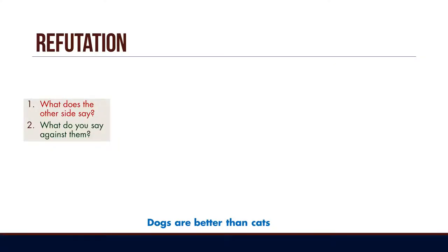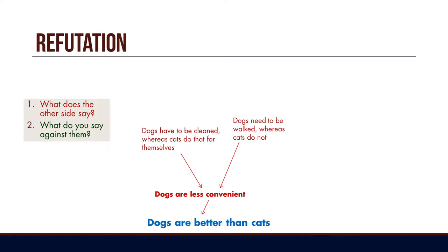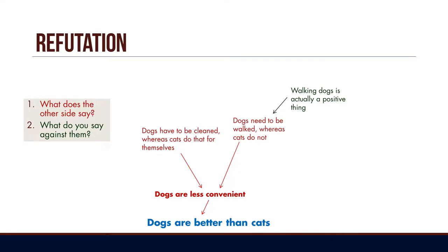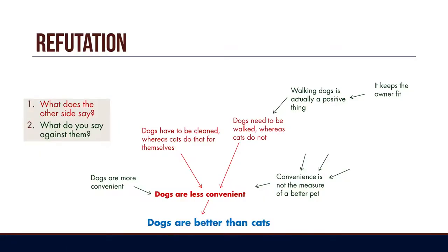Then we teach students what about the other side — how would you refute an argument? We get them to list the thesis and then in red, a different coloured pen, show distinctly the case against. The other side would be: dogs are less convenient because they need to be walked whereas cats do not, and dogs need to be cleaned whereas cats can do that themselves. Then students actually address these counterarguments. They'll say it's a positive thing that dogs need to be walked because it allows the owner to get fit, or challenge that convenience isn't the best measure of a pet, or argue dogs are actually more convenient because they don't trigger allergies.